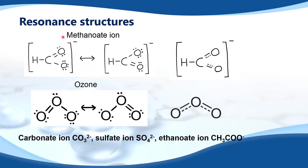We have the methanoate ion — the double bond can be up here or it could be down here, and here is the resonance hybrid structure. And ozone: the double bond could be this side or this side, and again the resonance hybrid structure is shown.